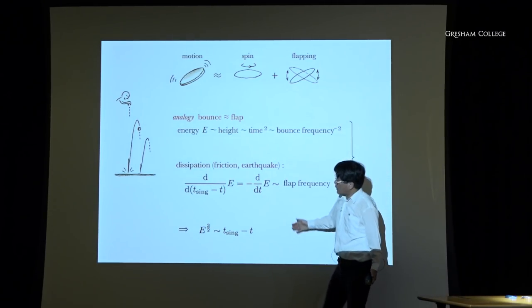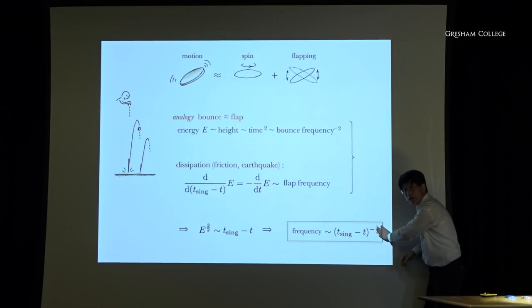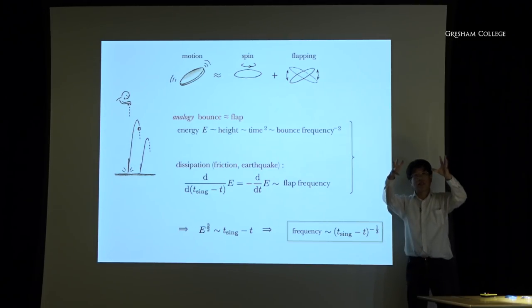After solving the equation, energy to the power three-halves is proportional to the remaining time until singularity — t-sing, both because something diverges and because the disk sinks. As remaining time decreases, energy decreases, and frequency rises like (t-sing) to the power negative one-third. This is a really strange power.